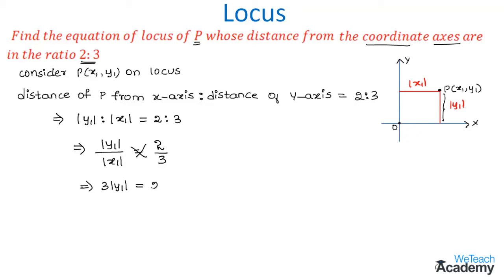By cross-multiplying, we get 3|y1| = 2|x1|. Then we need to square on both sides, so (3y1)² becomes 9y1², which is equal to 4x1². So that implies we get 4x1² - 9y1² = 0.